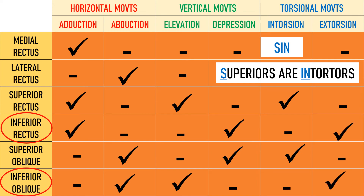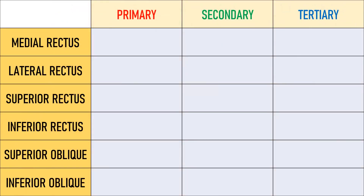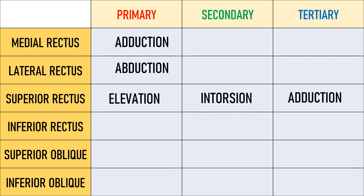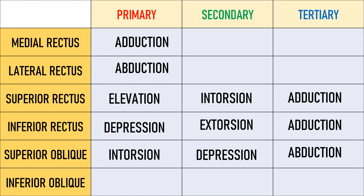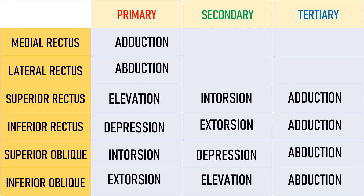Let's revise the actions of the six extraocular muscles. Medial rectus causes adduction. Lateral rectus causes abduction. Superior rectus causes elevation, adduction, and intorsion. Inferior rectus causes depression, adduction, and extorsion. Superior oblique causes depression, abduction, and intorsion, while inferior oblique causes elevation, abduction, and extorsion.